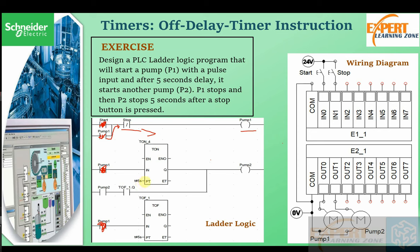Because pump P1 is running, all its contacts close. One of those contacts starts the on-delay timer block. Five seconds later the timer output goes to logic one and pump P2 comes on. So pump P1 has started and five seconds later pump P2 has also started. When you press the stop button, pump P1's logic goes off and the timer block also goes off.